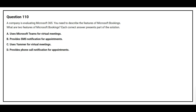Question 110. A company is evaluating Microsoft 365. You need to describe the features of Microsoft Bookings. What are the two features of Microsoft Bookings? Option A: Uses Microsoft Teams for virtual meetings. Option B: Provides SMS notification for appointments. Option C: Uses Yammer for virtual meetings. The correct answers are Option A, uses Microsoft Teams for virtual meetings, and Option B, provides SMS notification for appointments.